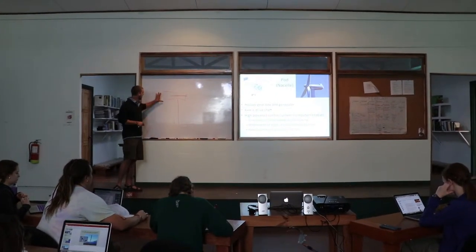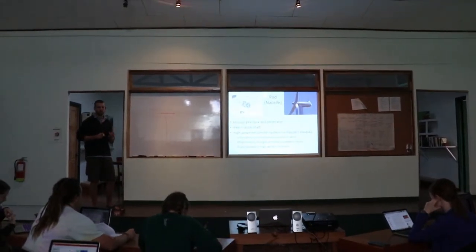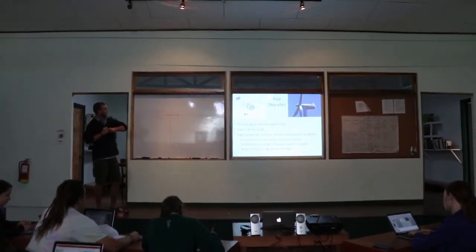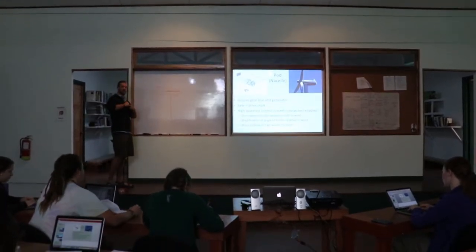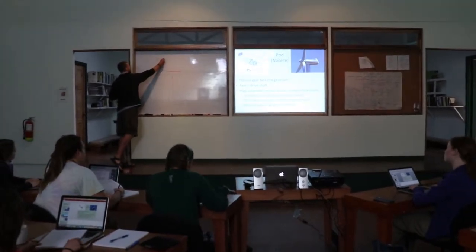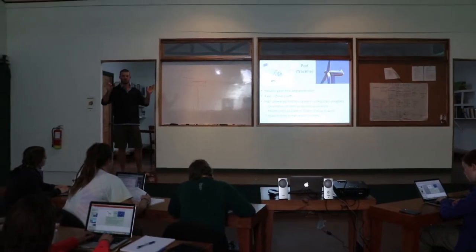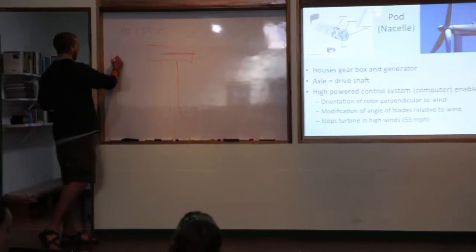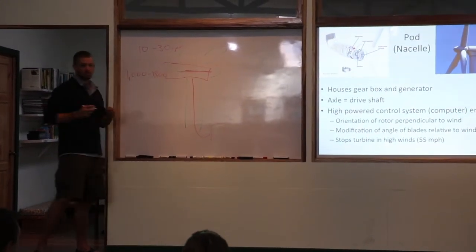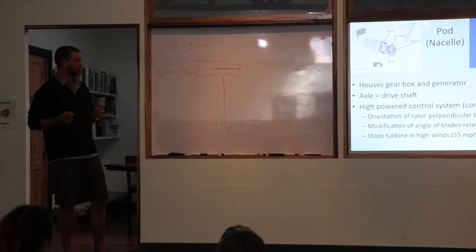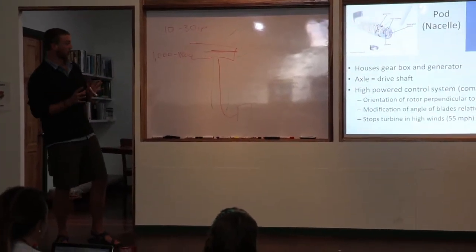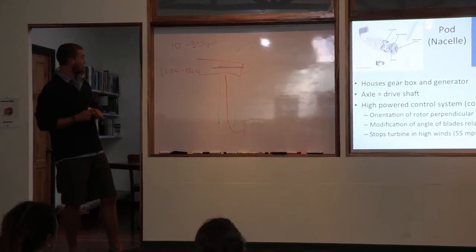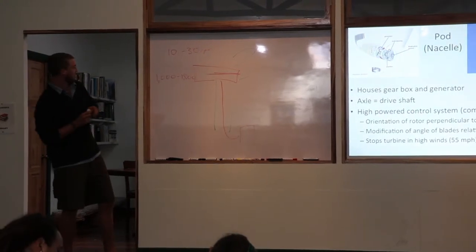The pod or nacelle - in this box, you have the three main things: the gearbox, the generator, and a computer that's driving the entire machine. So the rotor is going to be spinning anywhere between 10 to 30 rounds per minute. You can look up at a turbine and watch, you can count how many times that spins around. The generator, however, needs anywhere from 1,000 to 1,800 rounds per minute. So you have to step up that speed, and that's what the gearbox is. The gearbox is the set of many parts that's going to take that initial rounds per minute and up it and up it.